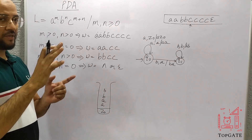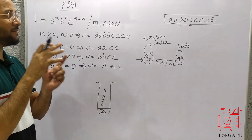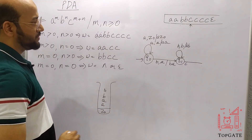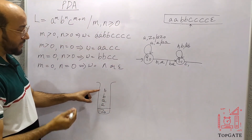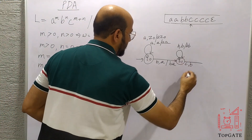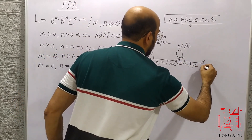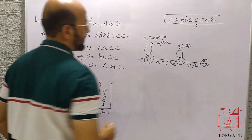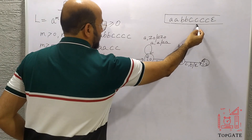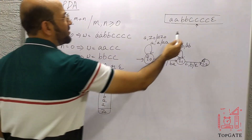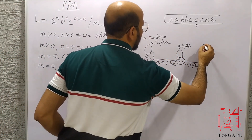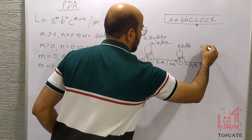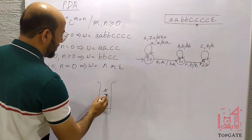Now we have to pop b's first, then a's. When the first c comes, the element to process is c and topmost stack element is b — we pop it out, moving to state q2. For the next c, topmost element is still b, so we take a self-loop at q2: element to process is c, topmost is b, and we pop it out.